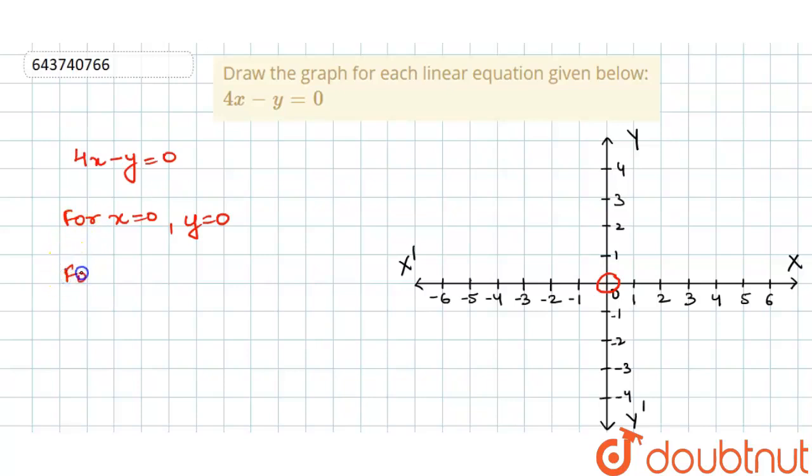Second, when we put x is equal to 1, so y will come out to be, when we put this as x is equal to 1, this will become 4 minus y is equal to 0. Therefore value of y will come out to be 4 because this minus y when we take on the right hand side becomes plus so y is equal to 4.